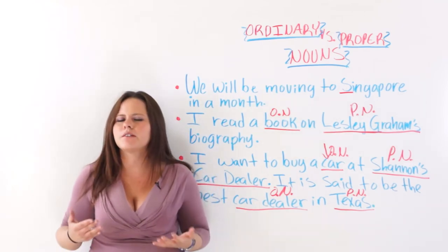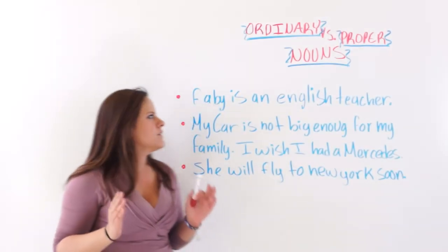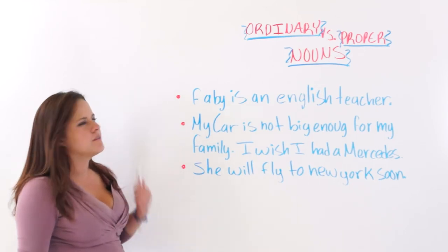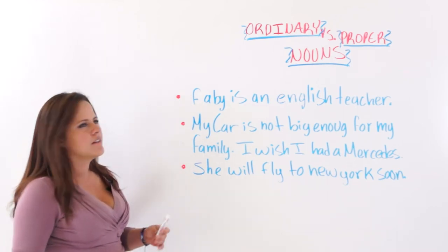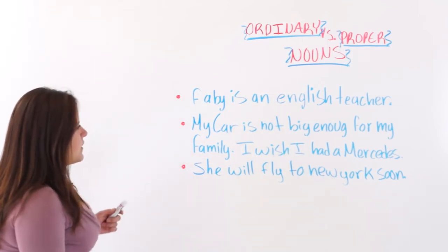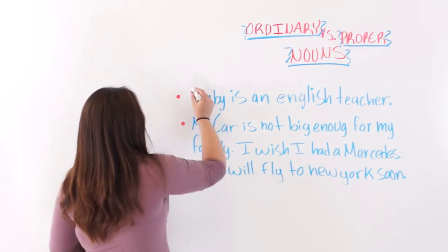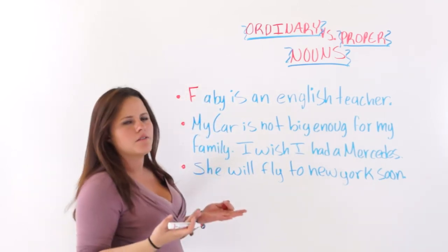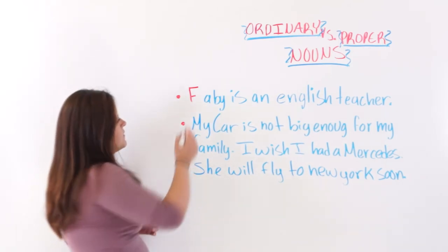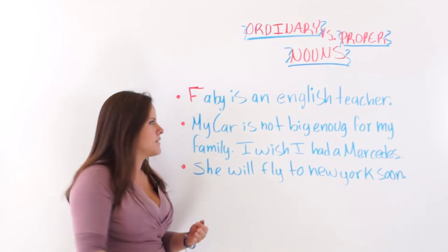Next I am going to move on to some practice sentences so that you can practice with me. You are going to help me identify the ordinary and proper nouns and capitalize them or use lowercase letters. The first one says: 'Fabi is an English teacher.' 'Fabi' to start with is a proper noun — and this is the beginning of the sentence, so we must always capitalize the first letter of the sentence even if it's not a proper noun.